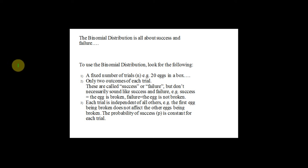Now I will introduce to you the binomial distribution. The binomial distribution is all about success or failure. The probability for success equals P, and the probability for failure equals Q, and the probability of success plus the probability of failure equals 1.